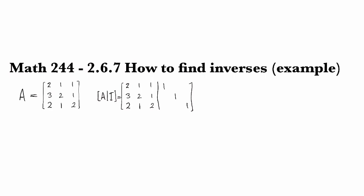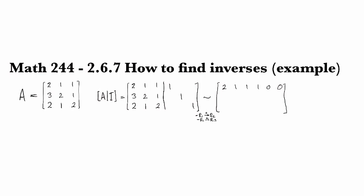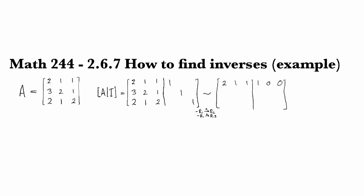Okay, to row reduce this, I think I will begin by subtracting the first row from each of the other two rows. So I'm going to do minus row 1 into row 2 and minus row 1 into row 3. I'm going to be keeping my first row as it is: 2 1 1 1 0 0. And then subtracting this row from the second one, I'm going to get 1 1 0 and then minus 1 1 0.